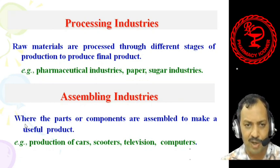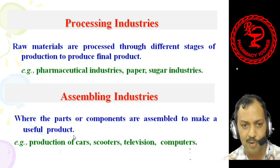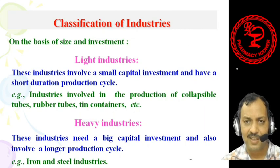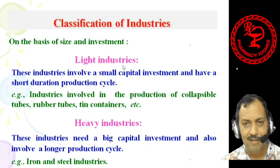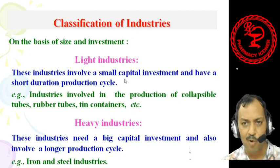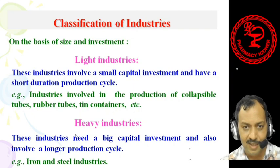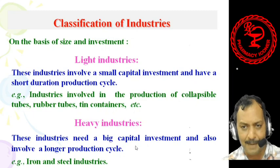Assembling industries are those where parts or components are assembled to make a useful product — examples include production of cars, scooters, televisions, and computers. On the basis of size and investment, industries are classified as light industries and heavy industries. Light industries involve small capital investment and have a short production cycle — examples include industries producing collapsible tubes, rubber tubes, and tin containers. Heavy industries need big capital investment and involve a longer production cycle — iron and steel industries are examples.